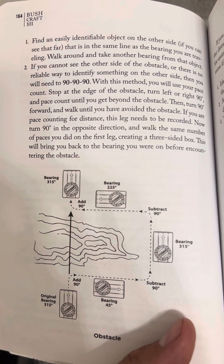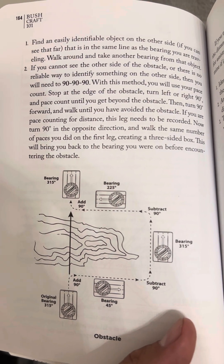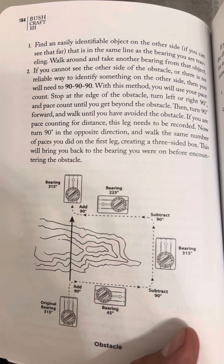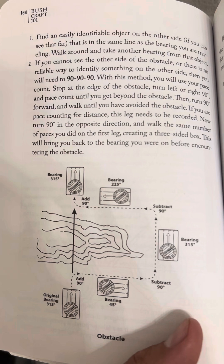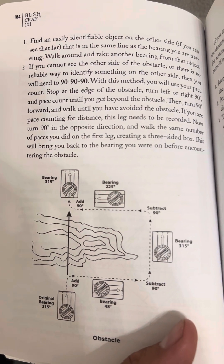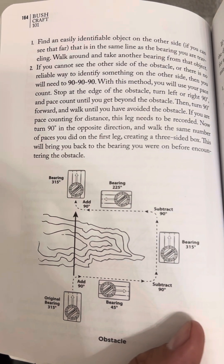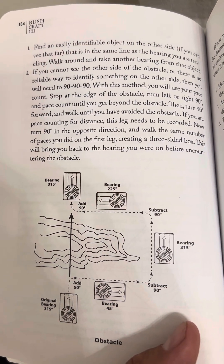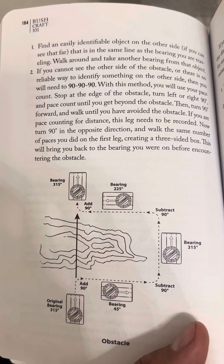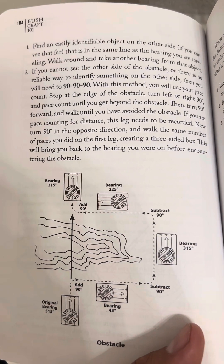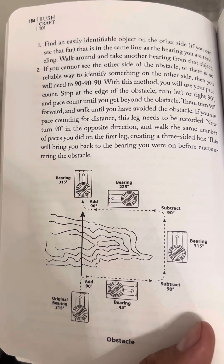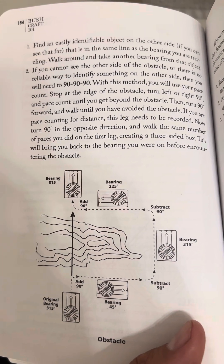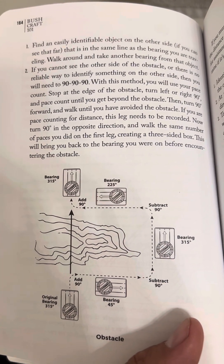Then turn 90 degrees forward and walk until you have avoided the obstacle. If you are pace counting for distance, this leg needs to be recorded. Now turn 90 degrees in the opposite direction and walk the same number of paces you did on the first leg, creating a three-sided box. This will bring you back to the bearing you were on before encountering the obstacle.